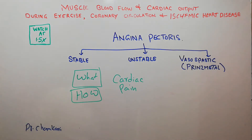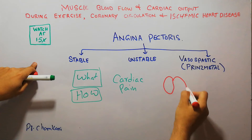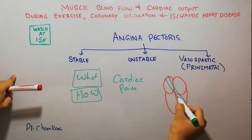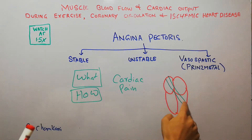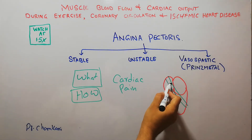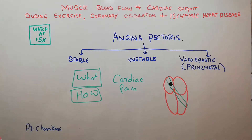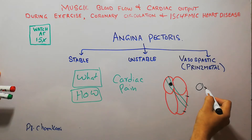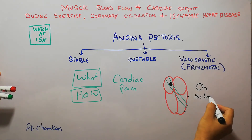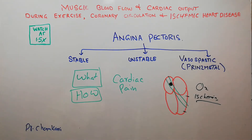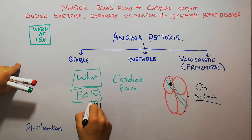The heart is supplied by blood vessels known as coronary blood vessels. If a coronary vessel is occluded — for example, blood flow is stopped — the portion of the heart supplied by that vessel will not receive enough oxygen and blood, leading to ischemia. If blood flow is completely stopped due to complete occlusion, it is known as myocardial infarction, MI, or heart attack.